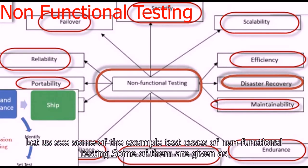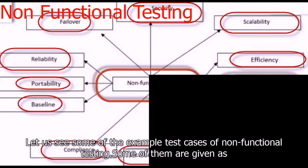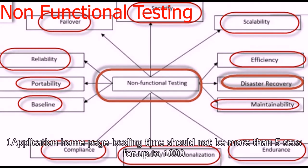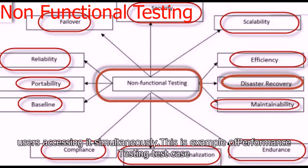So these are some of the types of non-functional testing. Although the list is much longer, these are some of the well-known types. Let us see some example test cases of non-functional testing. First: the application home page loading time should not be more than 5 seconds for up to 1000 users accessing it simultaneously. This is an example of a performance testing test case.